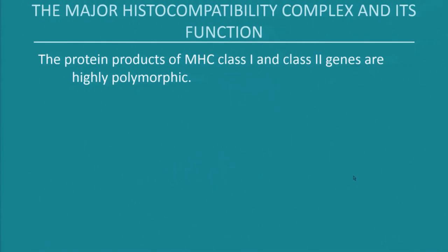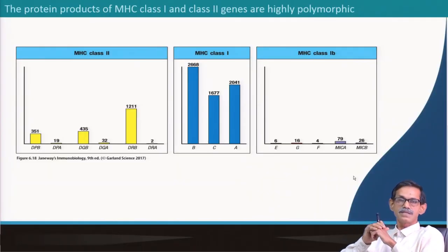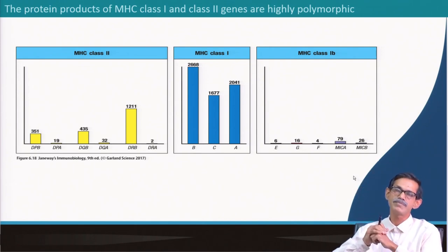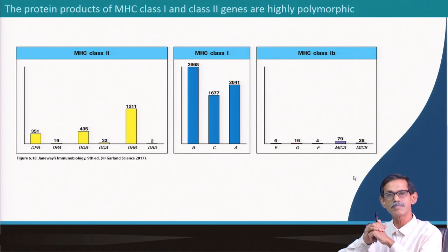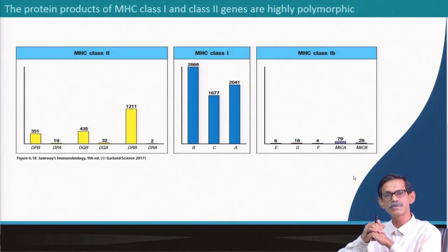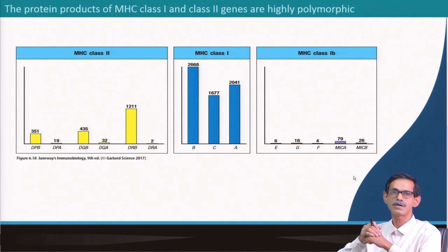The protein products of MHC class 1 and class 2 are highly polymorphic. Looking at the distribution of MHC variety in humans: MHC is mostly referred to in the context of mouse, though it is commonly used in human systems as well. In humans it is called HLA — Human Leukocyte Antigen. That is why during transplantation you may have heard the term HLA typing. HLA and MHC are synonymous.